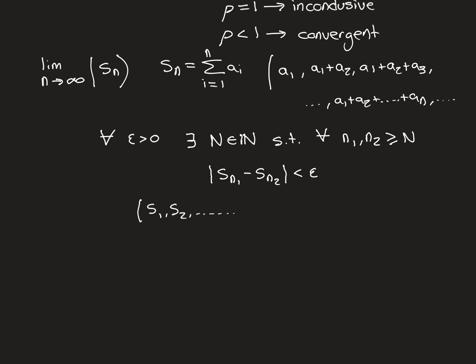We have this sequence of partial sums S_1, S_2, and so on. The Cauchy criterion says that no matter what epsilon you give, there must exist a big N — dependent on epsilon — such that for any two points S_{n_1} and S_{n_2} of the sequence beyond that big N, how far apart they are is going to be less than epsilon. We can now think of these as partial sums and get a formula in terms of the terms of the actual series.